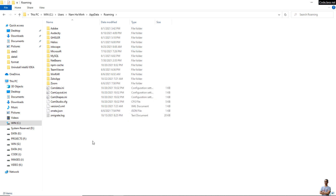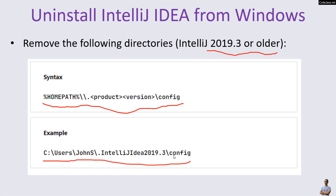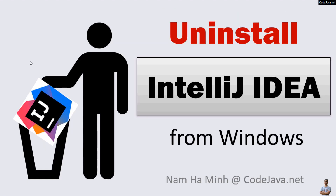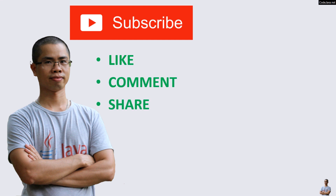That's how to completely uninstall IntelliJ IDEA from Windows operating system. Also note that if you have IntelliJ IDEA version 2019.3 or older, you should check and remove this directory: your user home directory, home path, product and version, and config. And that's how to completely uninstall IntelliJ IDEA. I hope you find this video helpful — please subscribe to my channel, like, comment and share this video. Thanks for watching.